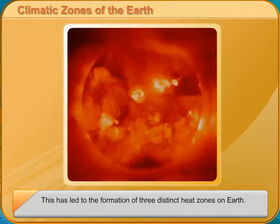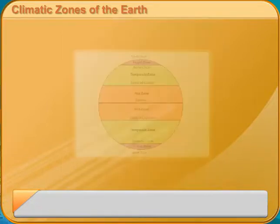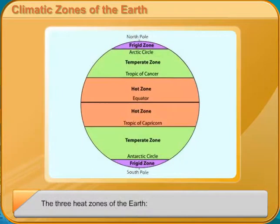The three heat zones of the Earth are: the Torrid Zone, the Temperate Zone, and the Frigid Zone.